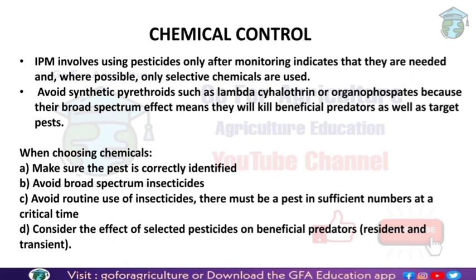In IPM, pesticides used should be selective chemicals. Selective chemicals kill only a particular type of insect and do not affect beneficial insects. We must avoid using synthetic pyrethroids such as lambda-cyhalothrin or organophosphates, because these are broad-spectrum pesticides — they are not selective and will kill all kinds of insects, including beneficial ones.